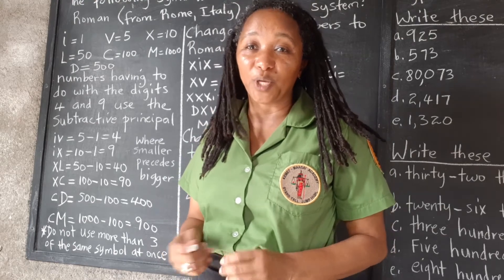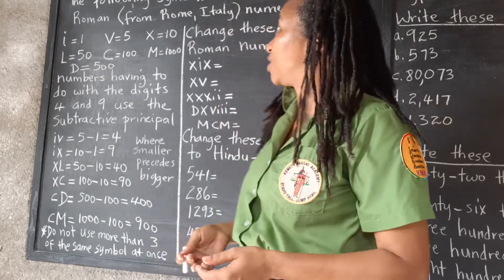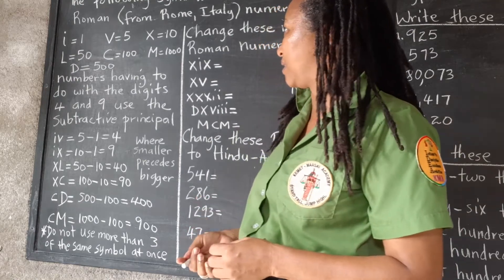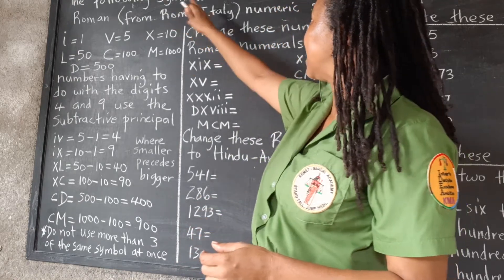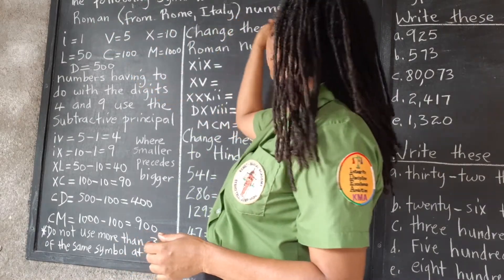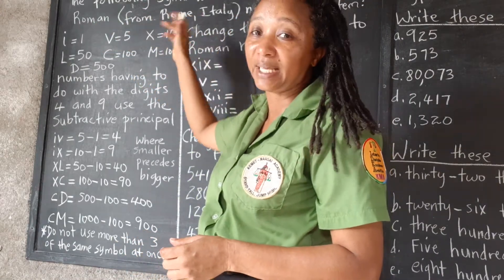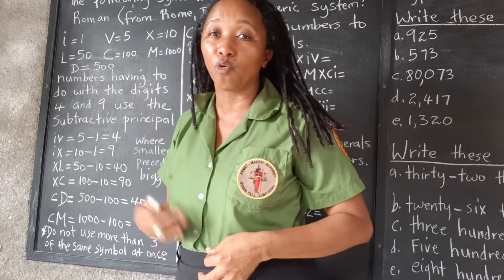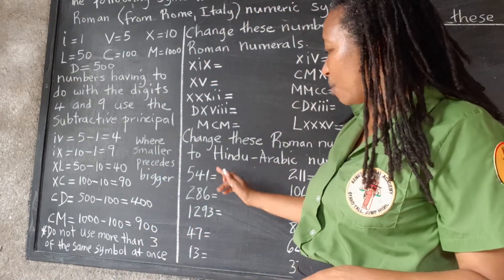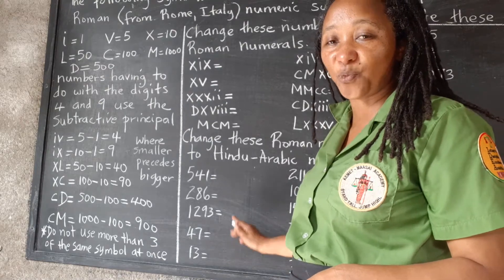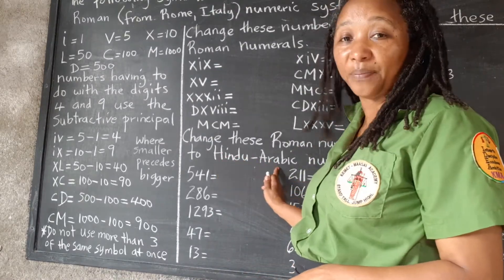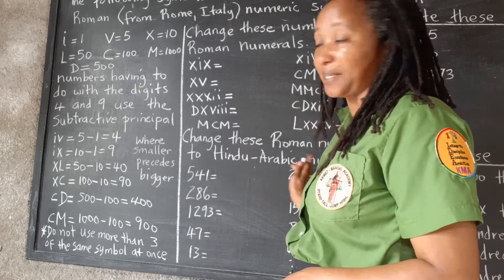The number system that we use today is called the Hindu-Arabic system. The following symbols were used in the Roman numeral system, from Rome, Italy — that's how it got its name, Roman numerals. And the numbers that we use now are the Hindu-Arabic system.